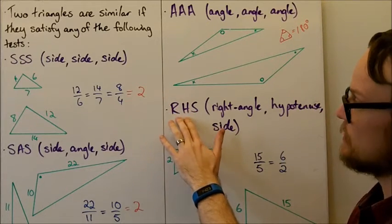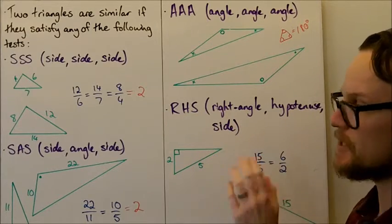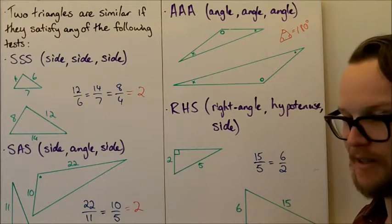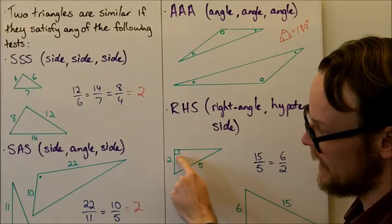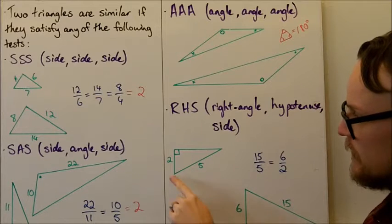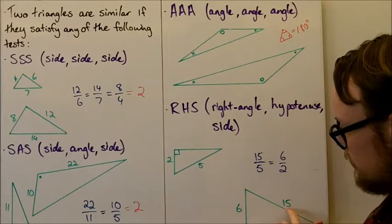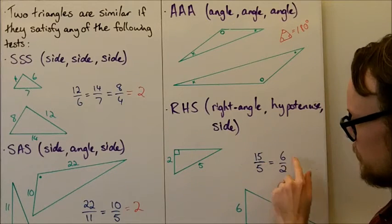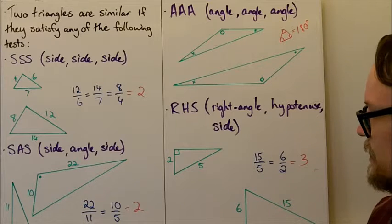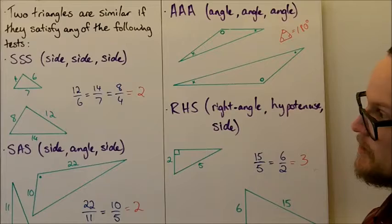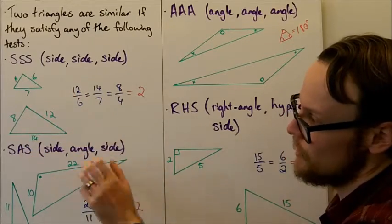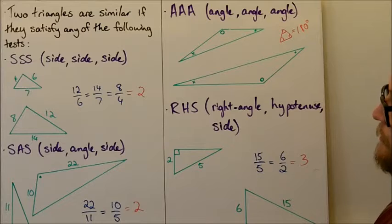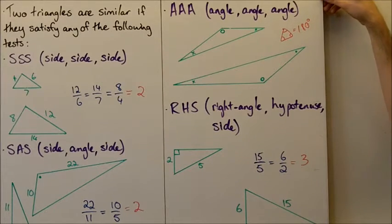The final test is RHS — right angle, hypotenuse, side — which applies to right-angled triangles. The hypotenuse must be in proportion and one of the other sides must also be in proportion. Here we have two right angles; the hypotenuse is 15 over 5, and the other side gives 6 divided by 2, which also equals 3. Since both ratios equal 3, these two triangles are similar. So in summary, there are four tests for similarity: SSS, SAS (where the angle must be between the two sides), AAA, and RHS.